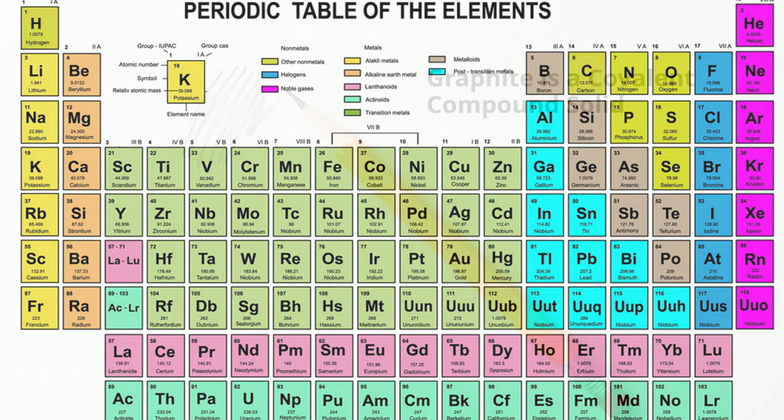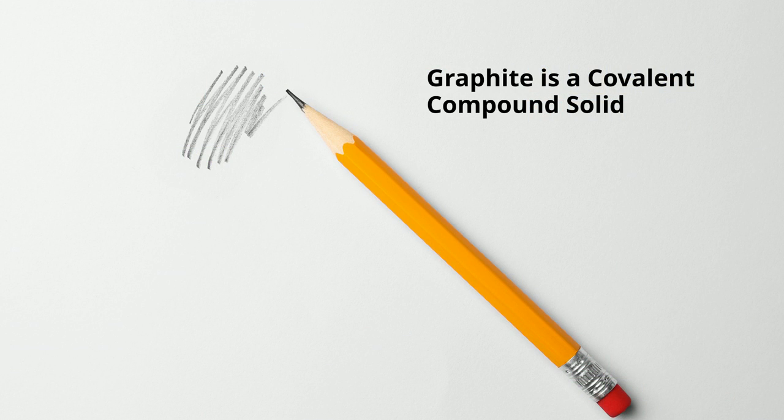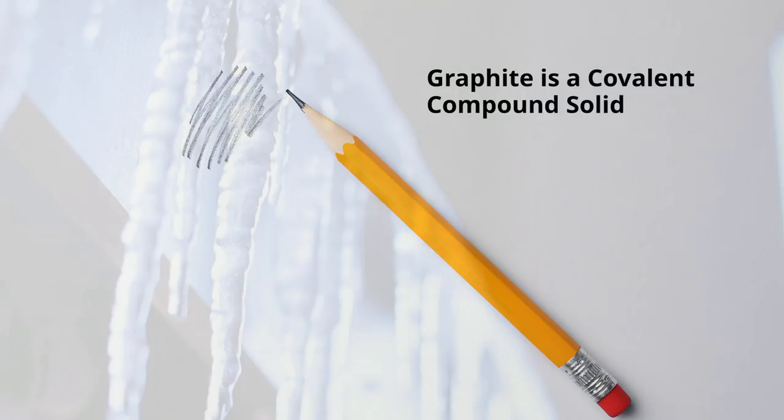Solid covalent compounds tend to be soft. Covalent compounds have relatively low melting and boiling points.